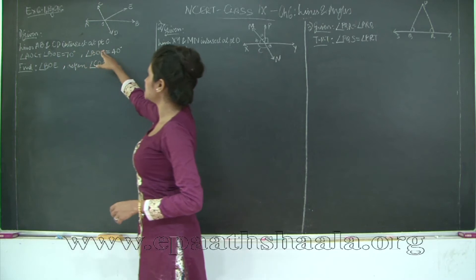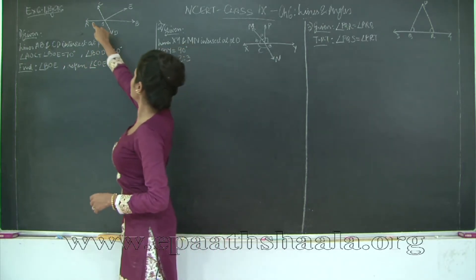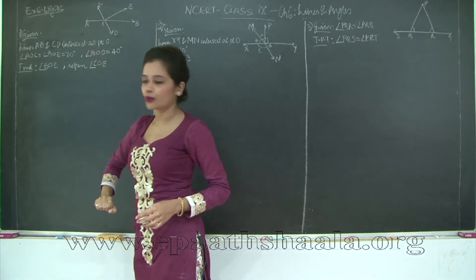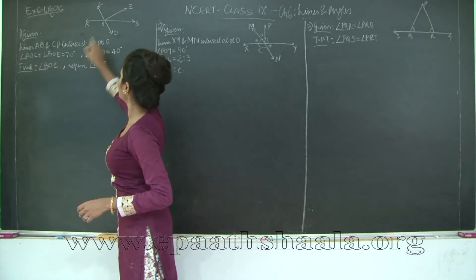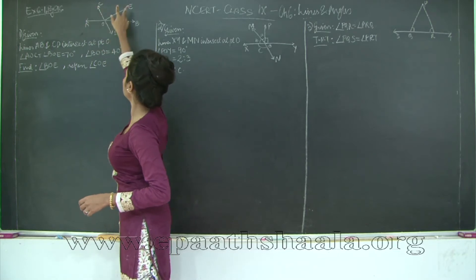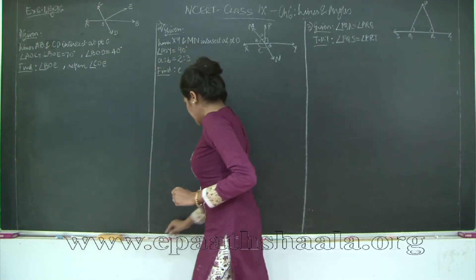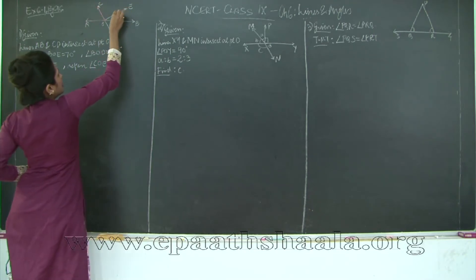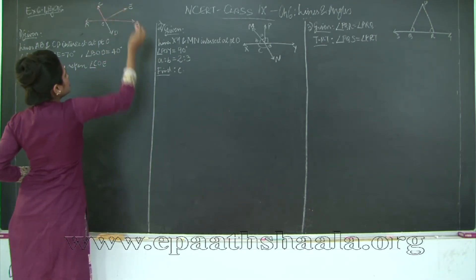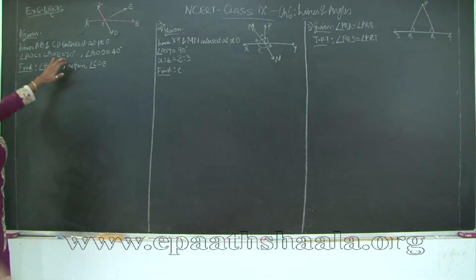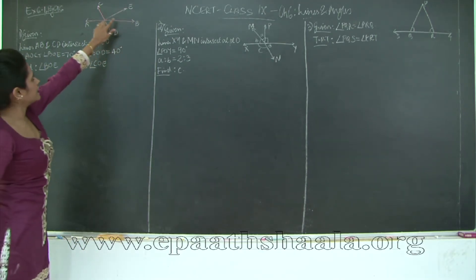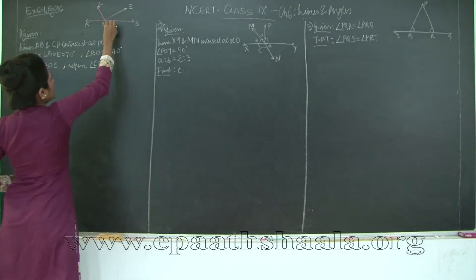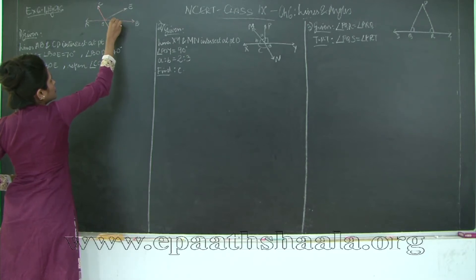You have lines AB and CD intersecting at point O. So this is my line AB and this is my line CD — they are intersecting at point O. Also, angle AOC plus angle BOE is 70 degrees. Let's mark these two angles. Angle AOC plus angle BOE is equal to 70 degrees, and angle BOD is 40 degrees. Since BOD has already been given, I will mark it here as 40 degrees.